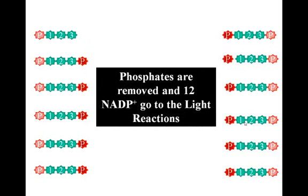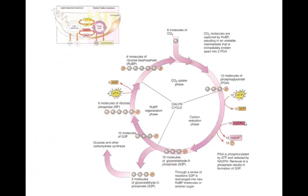Phosphates are removed and twelve NADP plus go to the light reactions. The ATPs and NADPHs will return to the light reactions to be recharged. This now produces twelve molecules of glyceraldehyde 3-phosphate, two of which will be used to produce a sugar.